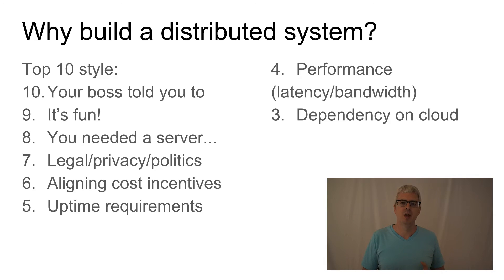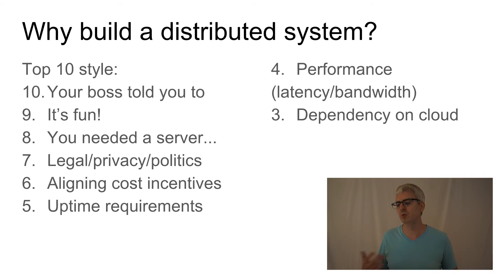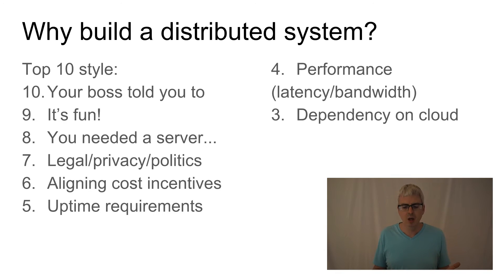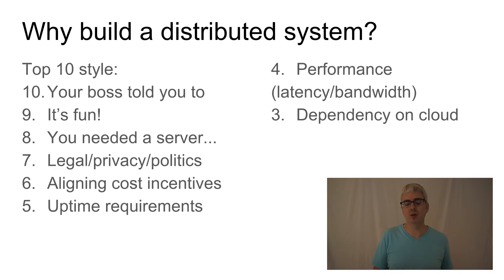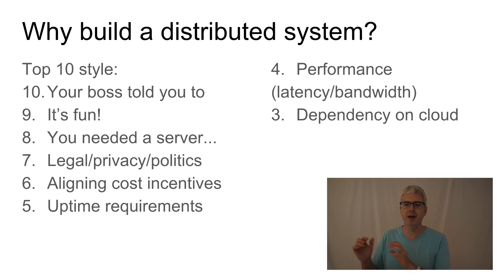Reason number three: you're building only part of the system. You rely on a cloud service provider or vendor providing an online service that does part of your computation — such as Amazon storage or Google's Bigtable. If you have a dependency on a cloud vendor and your system already has its state partitioned between that vendor and your system, you've already built a distributed system. At that point, you should think about whether there are other distributed systems techniques to make your system work better — and at least understand how to debug interactions between your code and your vendor's system.